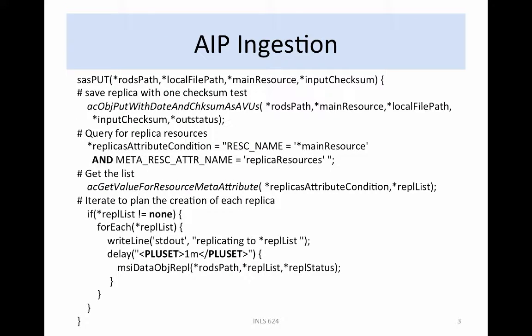Files ingested into the BNF are automatically processed to create replicas at alternate storage locations. The rule shown here lists actions performed to decide where to create the replicas. The rule uses input parameters to identify where the file is located on a staging area, where the original copy will be placed, and a checksum for the file. A copy is made at the specified location. The rule then checks an attribute on each storage resource to find a list of additional locations where replicas should be placed, and a loop is made over the list to store an additional copy at each location. These operations are queued for execution after a delay of one minute.